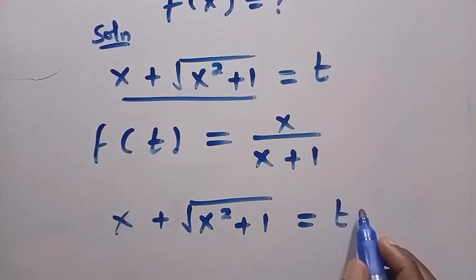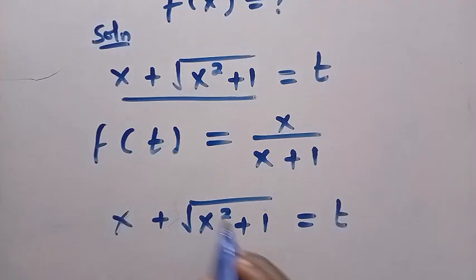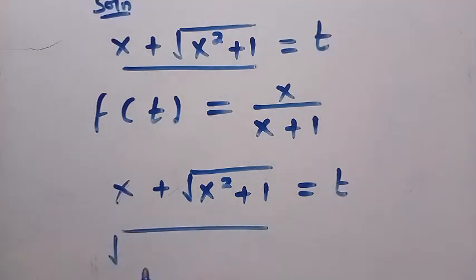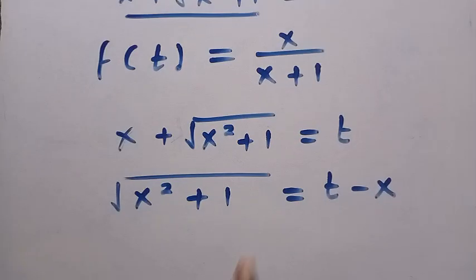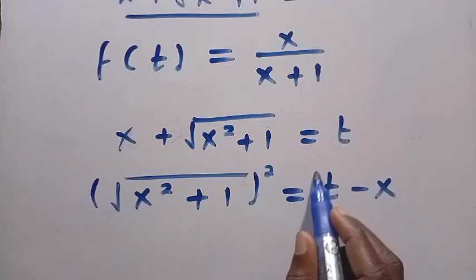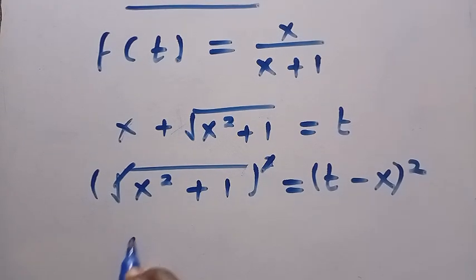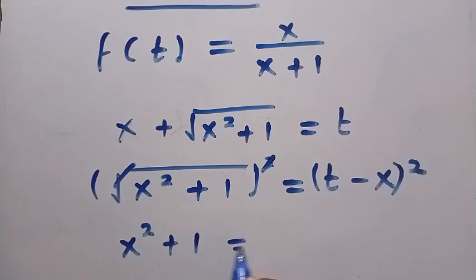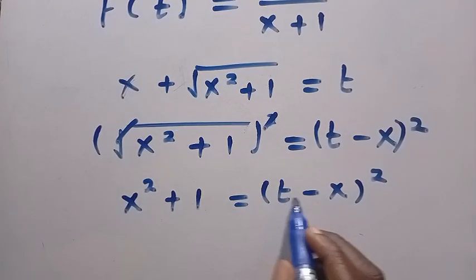So we have x plus the square root of x squared plus 1 equals t. Let's take x to the other side — it will be easy to take to the other side, not the square root of x squared plus 1. So it will be easy to take the square of both sides and this square root is cancelled. Therefore we have the square root of x squared plus 1 equals t minus x. So let's take the square of both sides — by squaring both sides, the square root and the square are cancelled.